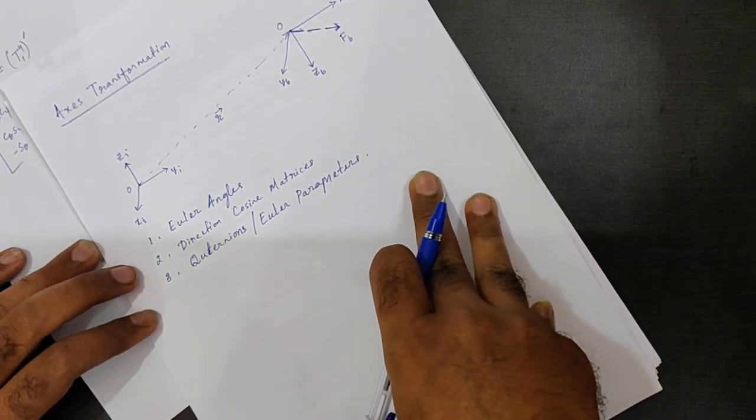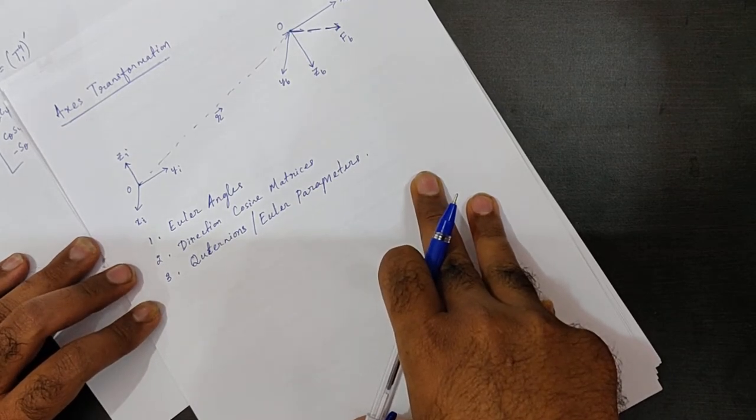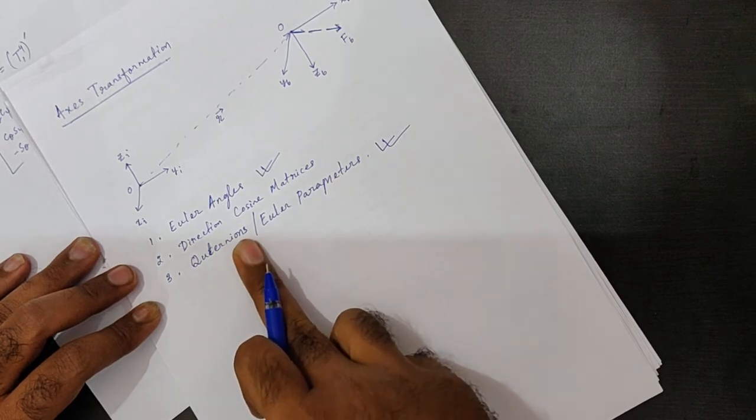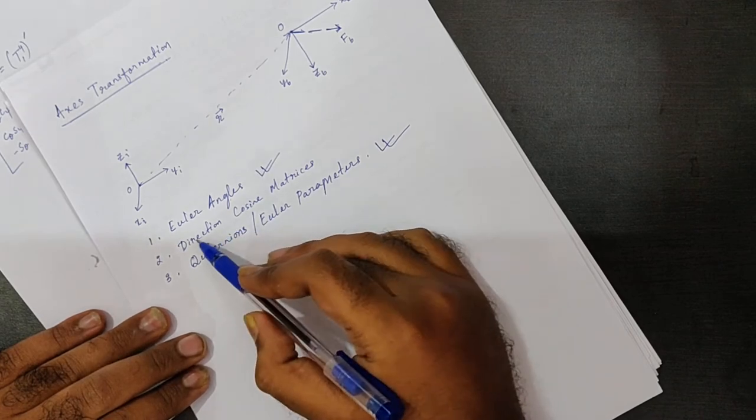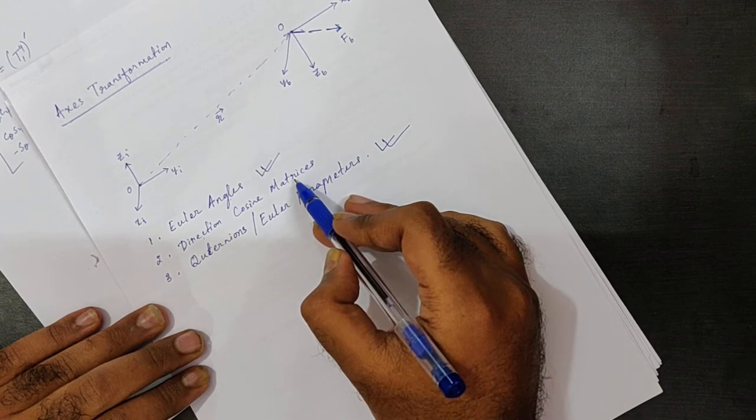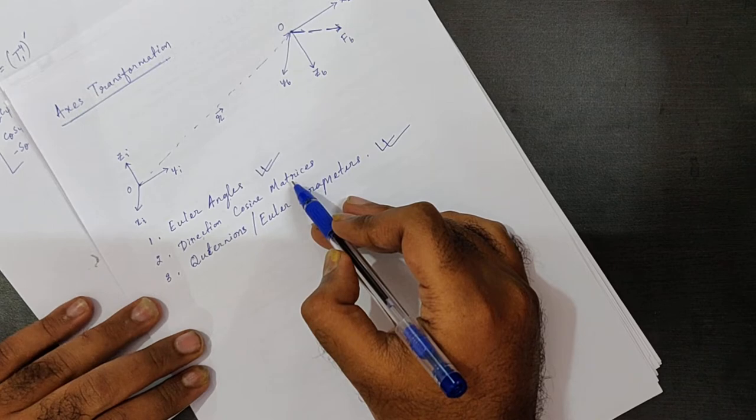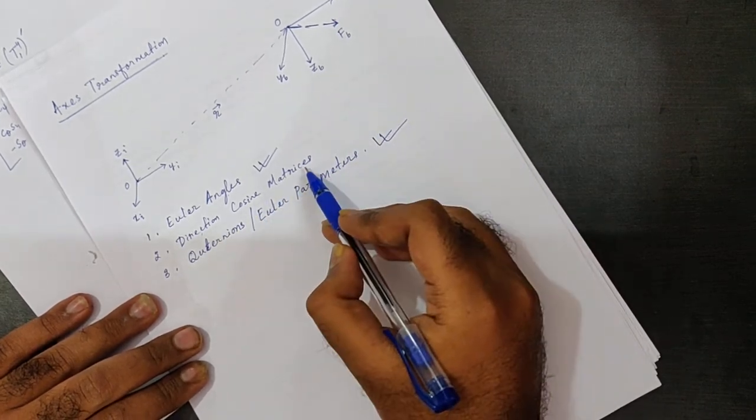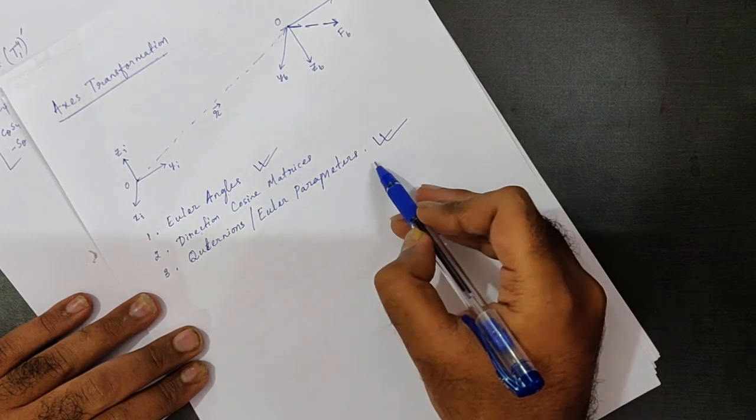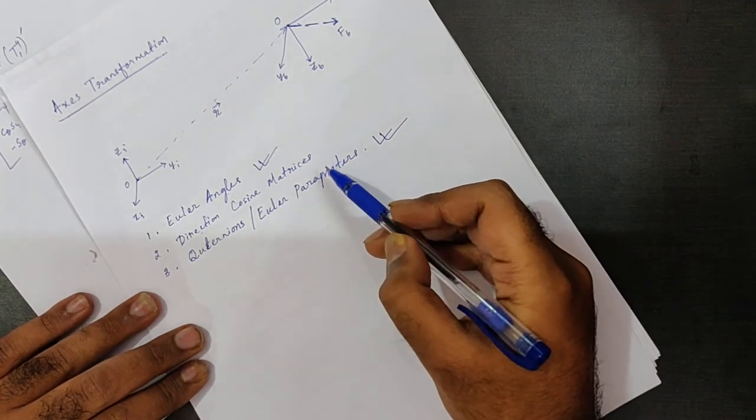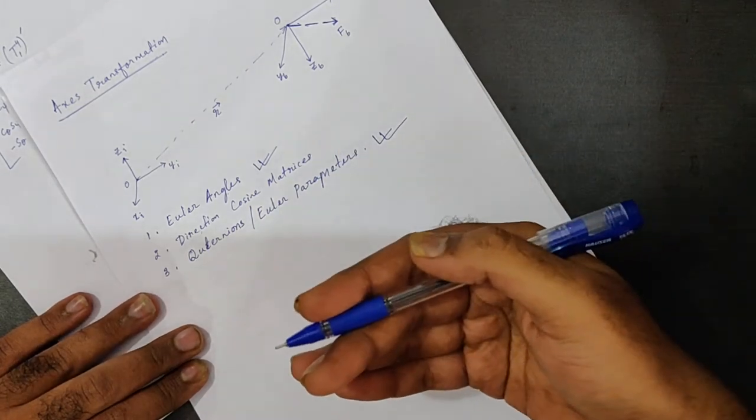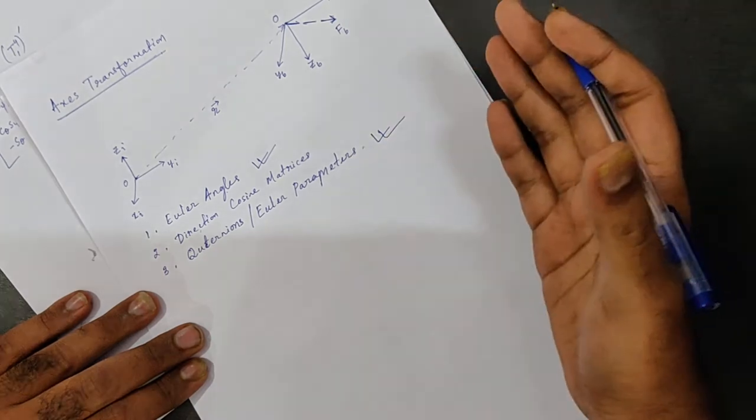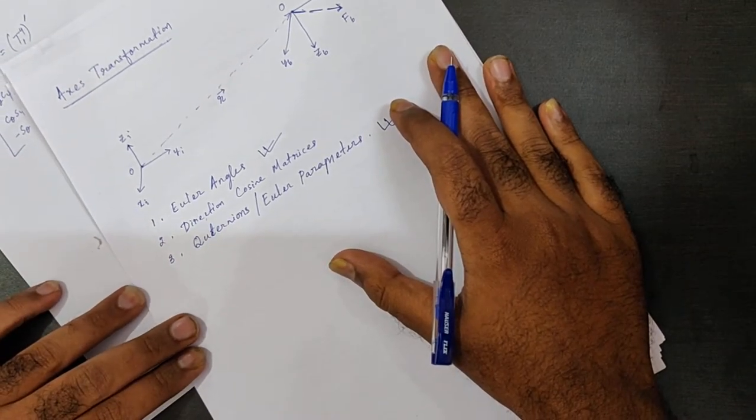However, to keep this lecture concise, we will only discuss about these two methods. The viewers can, if they understand these two methods, it is very easy to derive quaternions and I would recommend the viewers should go through the relevant books. Basically the concept behind it is the same. Only the formulation is different.